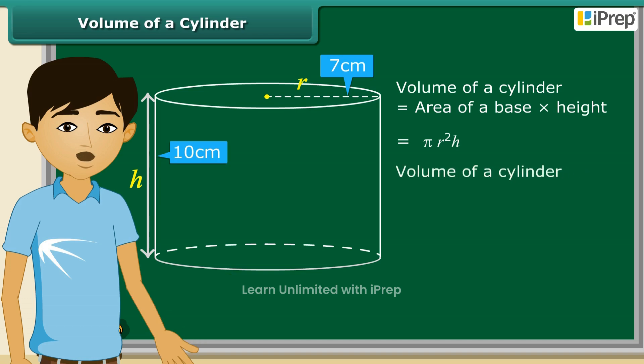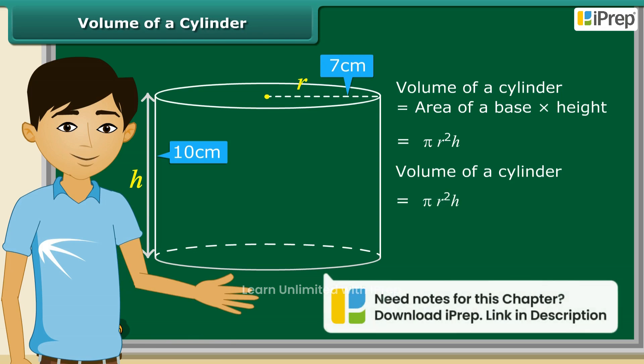We know the formula for volume of a cylinder is pi R square H. Now, we need to substitute the values here.